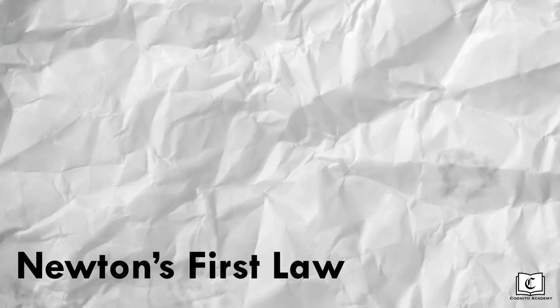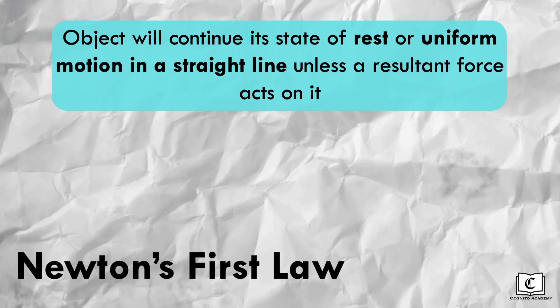Newton's first law of motion states that an object will continue its state of rest or uniform motion in a straight line unless a resultant force acts on it. In layman terms, if the resultant force on an object is zero, its speed and direction will remain the same.